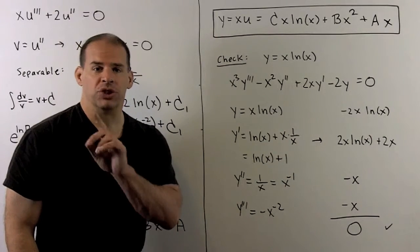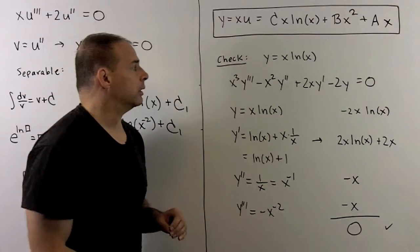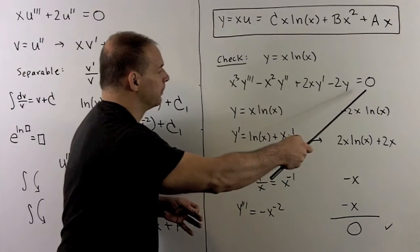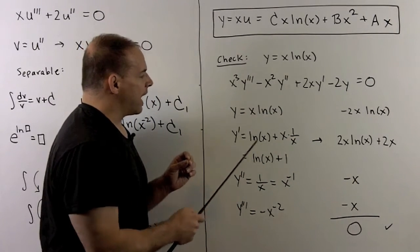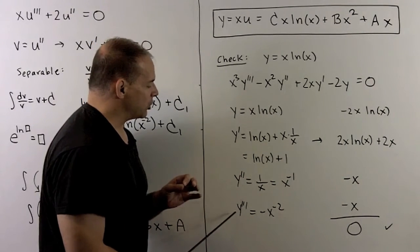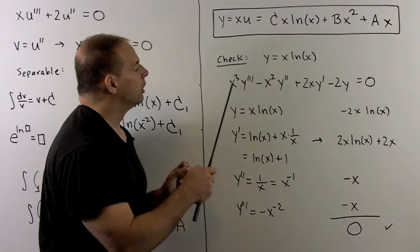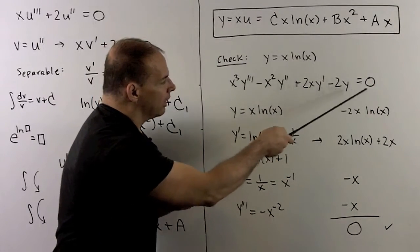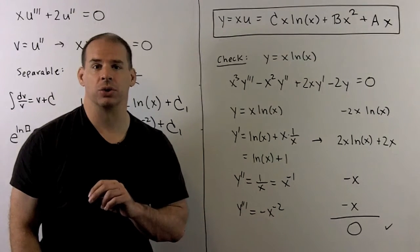Just to verify, we check that X natural log of X is a solution to the original problem. We compute each derivative: Y equals X natural log of X, Y prime equals natural log of X plus 1, Y double prime equals 1 over X, and Y triple prime equals minus X to the minus 2. Multiplying by the corresponding factors and substituting into the original ODE, everything cancels out nicely, confirming that X natural log of X is indeed our third solution.